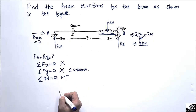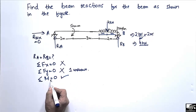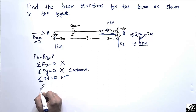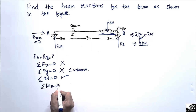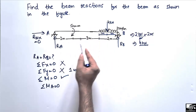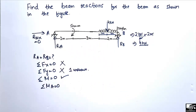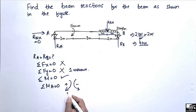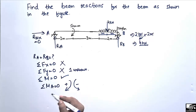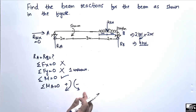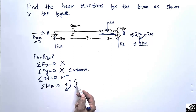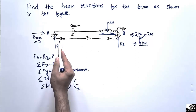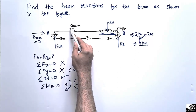The only equation we can use here is the moment summation. Taking the summation of moments at point A equals zero, with clockwise moments taken as positive and anti-clockwise moments as negative — this is our sign convention. We will now calculate all moments about point A starting from the left end.